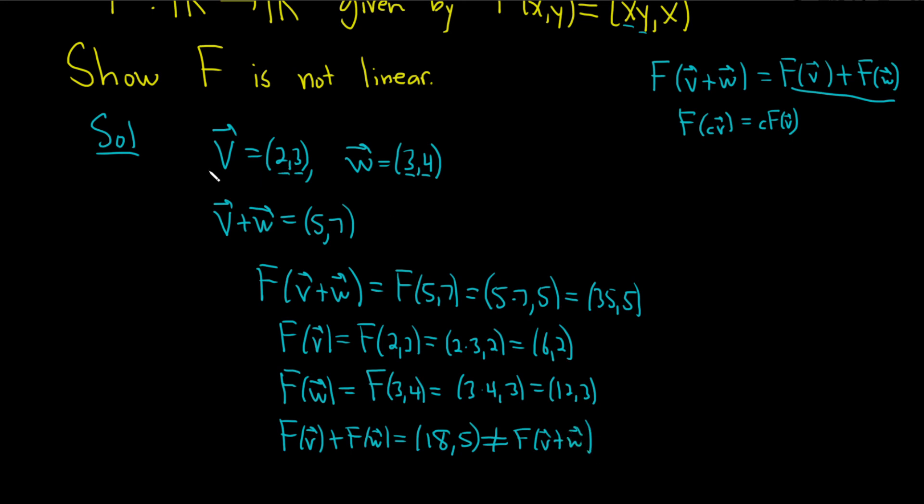Went kind of quick there. But basically, you just find two vectors and then you work out each piece of the definition. So here's the first piece, here's the second piece. They aren't the same. So F is not linear. So all you have to do is find one example where it fails to show that it's not a linear transformation. I hope this video has been helpful.